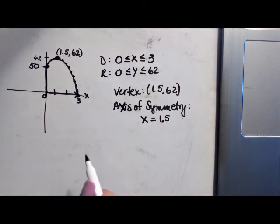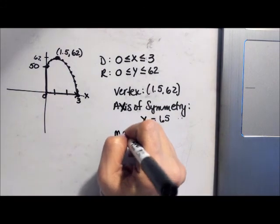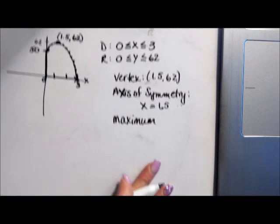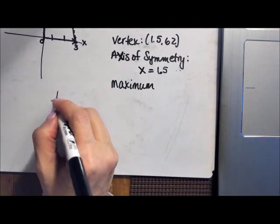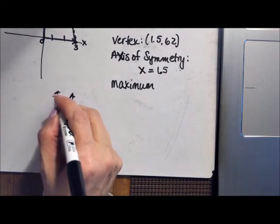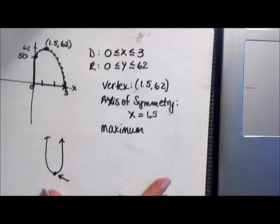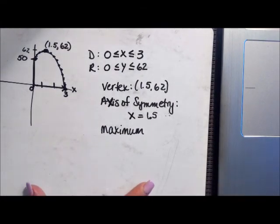Is it a maximum or a minimum vertex? It would be a maximum because it's the highest point. A minimum vertex would be when it goes this way and the vertex is down here. This would be a minimum vertex. All right so we've done domain and range, maximum.